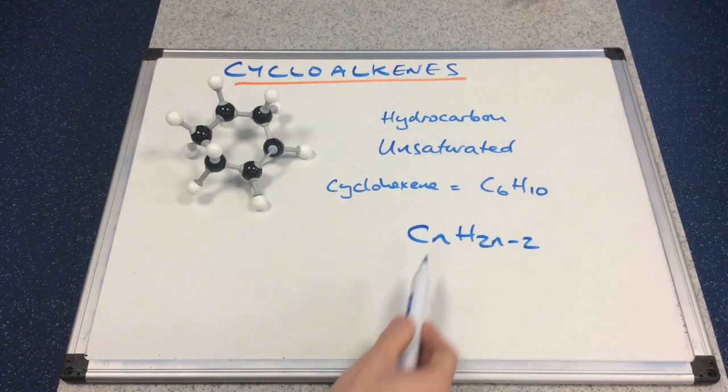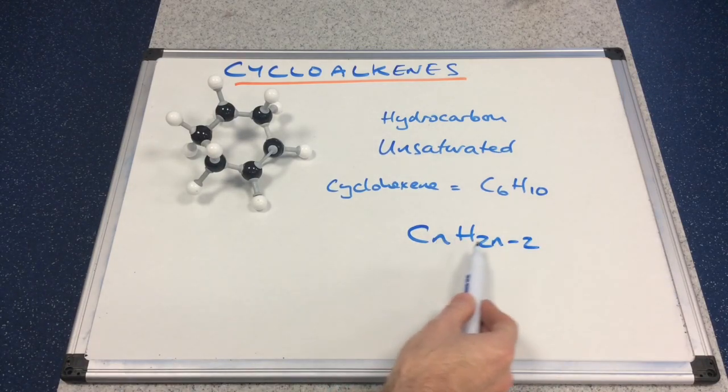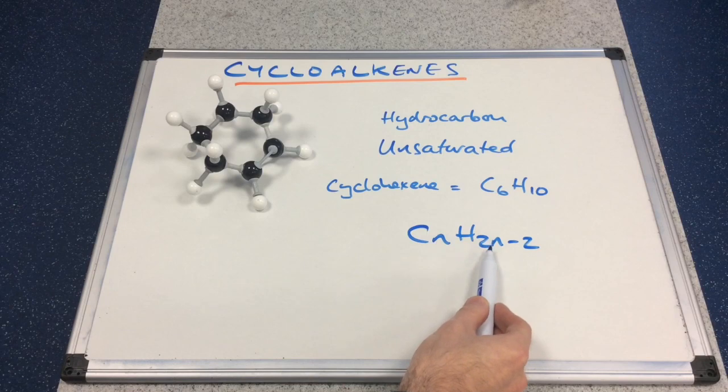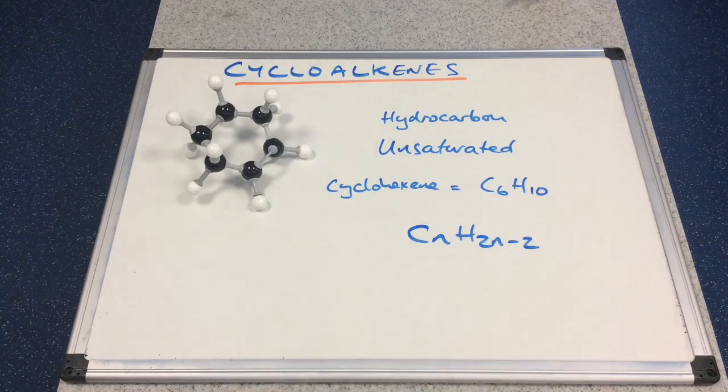So n is 6 in this case. That gives us C6, and 2 times 6 is 12, minus 2 gives you the 10.